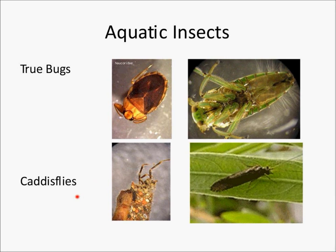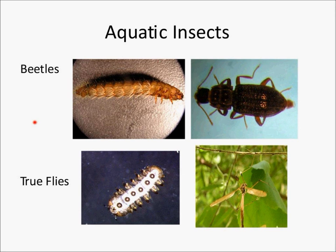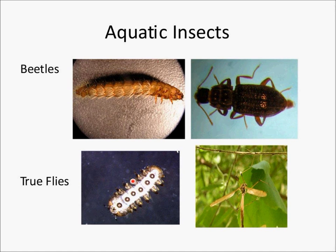Familiar to many fly fishermen are the caddisflies, closely related to butterflies and moths — their adults look very much like a moth, and they're known for building cases. The beetles are familiar to most people in their adult form, but their larvae can come in wide-ranging forms, from armored to unarmored. And the true flies, the Diptera, only have two wings as adults. Here we see a crane fly. There's a wide array of body types — that is a true fly larva right there.